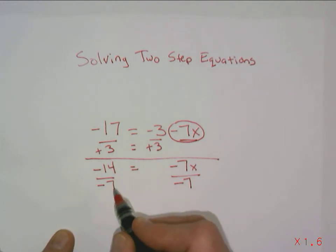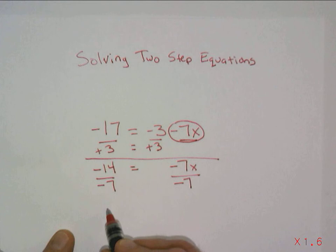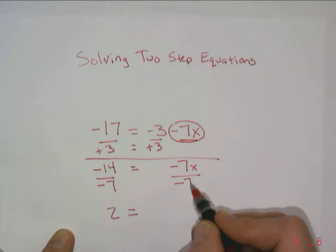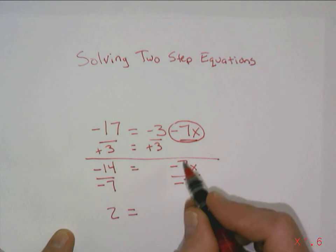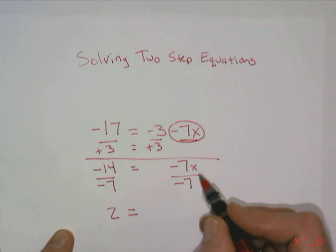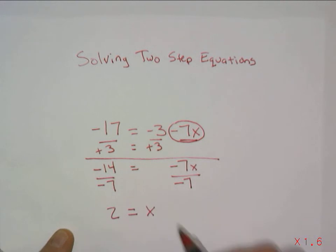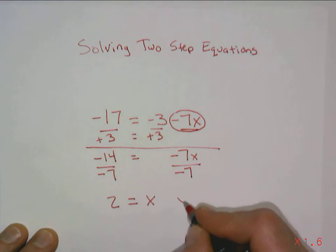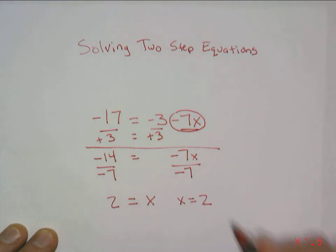And so a negative 14 divided by a negative 7 is a positive 2. Negative divided by negative is positive 2. So 2 equals a negative 7 divided by a negative 7 is 1. Again, this idea is that the 7's cancel. And so I'm left with x. So 2 equals x. For some reason, sometimes that bothers people. We could actually write it this way. It would mean the same thing, x equals 2.